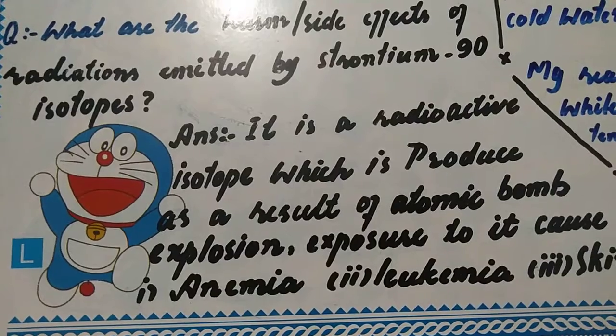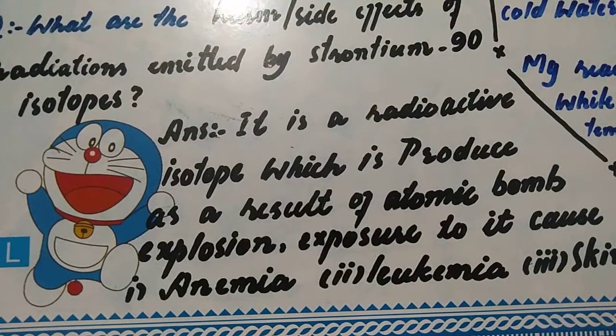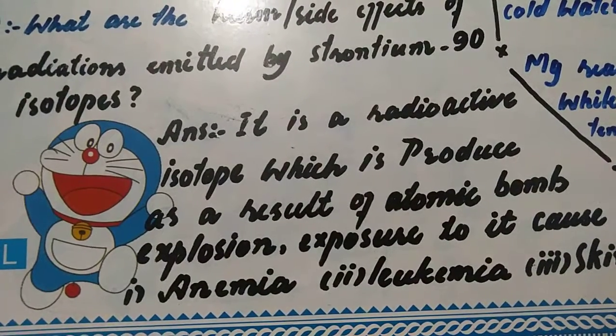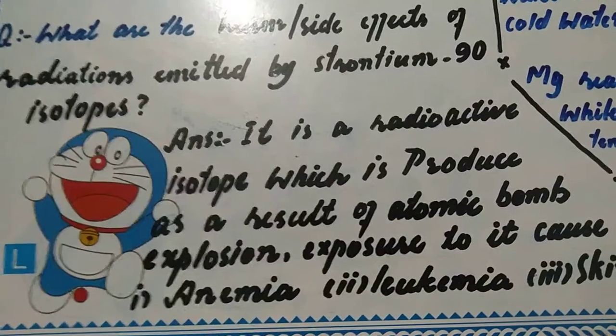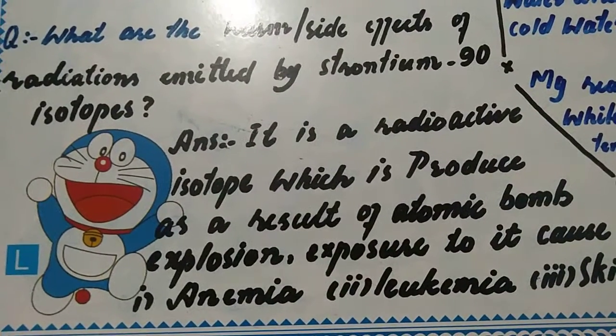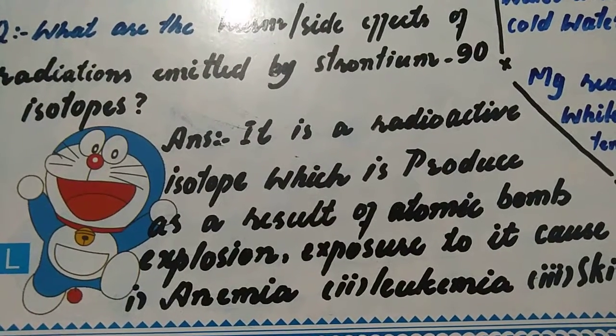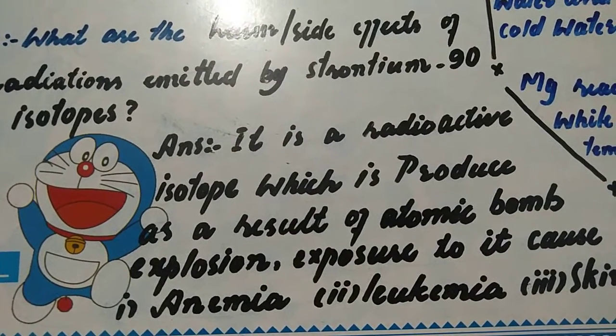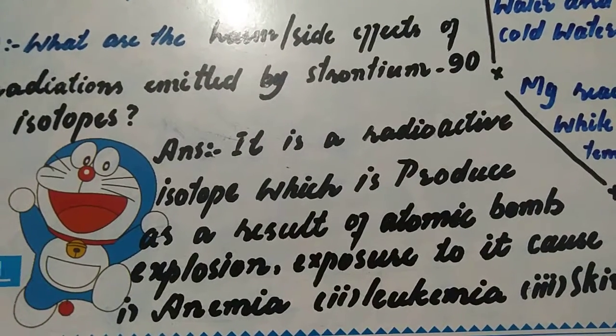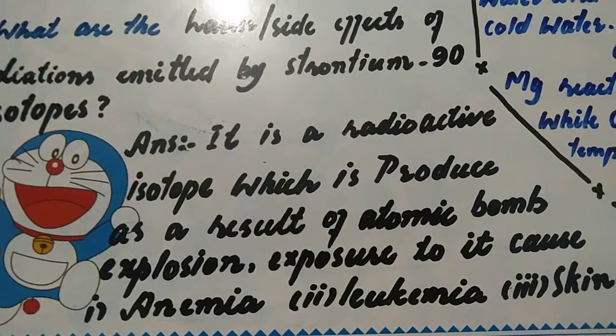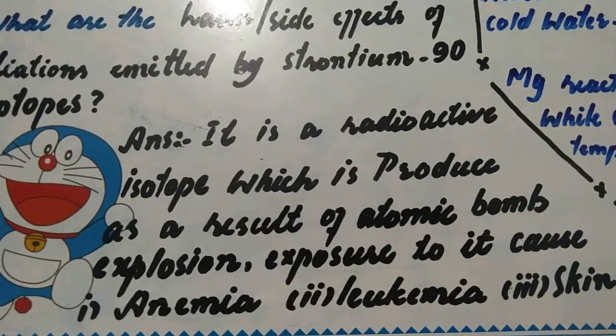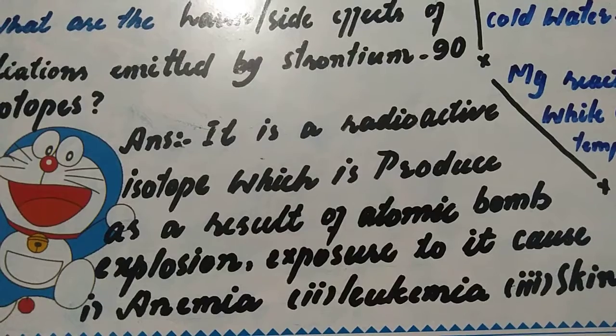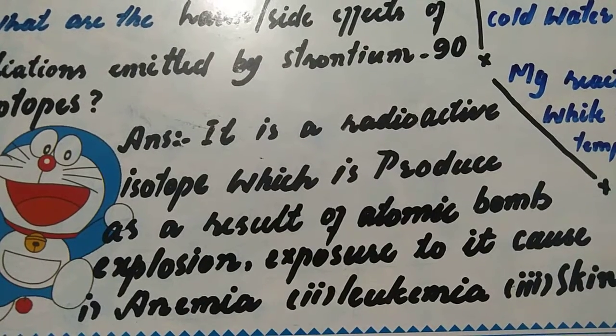It is a radioactive isotope which is produced as a result of atomic bomb explosion. When atomic bomb blast happens, strontium-90 isotope is produced in large quantity. When people are exposed to this radiation, it causes several health problems.